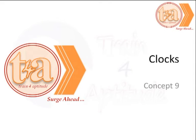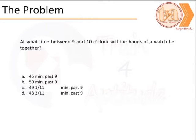Hi everyone and welcome back to Train for Aptitude. We have been discussing aptitude problems relating to clocks. Today we discuss the ninth concept in this series. Similar to the problem in the last concept, we are supposed to find the angle at which the two hands are — this time together.